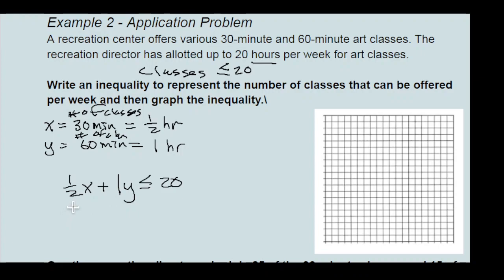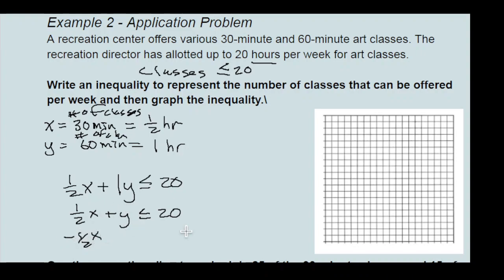So the number of half-hour classes times one-half, plus the number of one-hour classes times 1, should be less than or equal to 20. We can rewrite this as one-half x plus y is less than or equal to 20. To get y by itself, we just move the one-half x over to the right side.